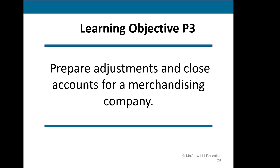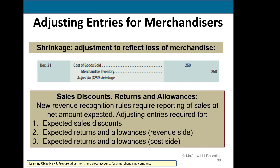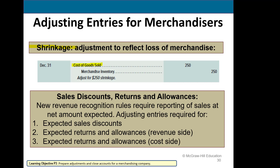Now we will look at an additional type of adjustment needed for a merchandising company: shrinkage. Even though we're using a perpetual inventory system and theoretically know the exact balance in merchandise inventory, we still have to take a physical inventory count and compare that to what our records show. Sometimes merchandise is lost due to theft or damage, and we need to record cost of goods sold for any shrinkage. We debit the expense cost of goods sold and credit merchandise inventory to bring it to the correct balance — here adjusted for $250 of shrinkage.